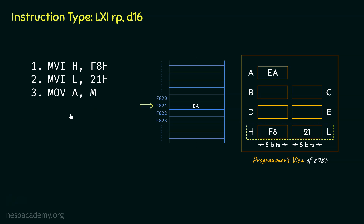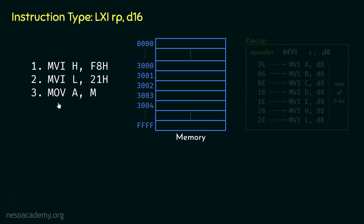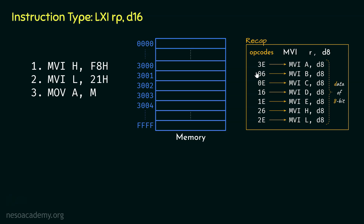Now let me show you how all these instructions will be stored within the memory. Within the memory we are not going to store the mnemonics — we will be storing their opcodes. Say the starting address of the program is 3000. The first opcode will be for MVI H, and these two instructions are two bytes long. MVI H has the opcode 26, so 26 will be loaded into memory location 3000, and the 8-bit data F8 will be loaded into the subsequent memory location 3001.